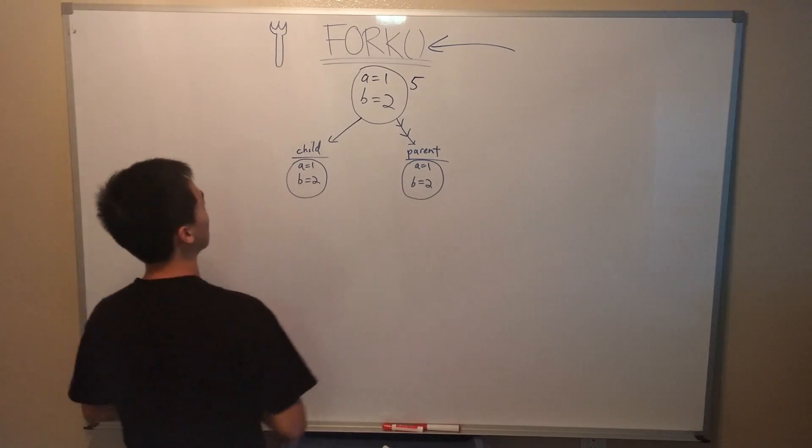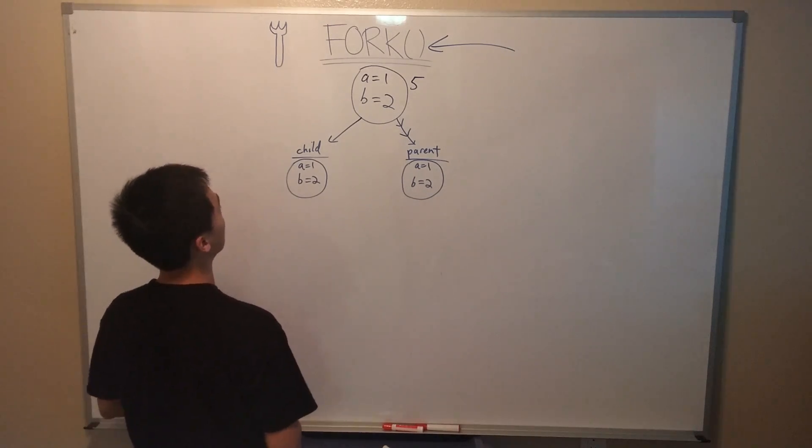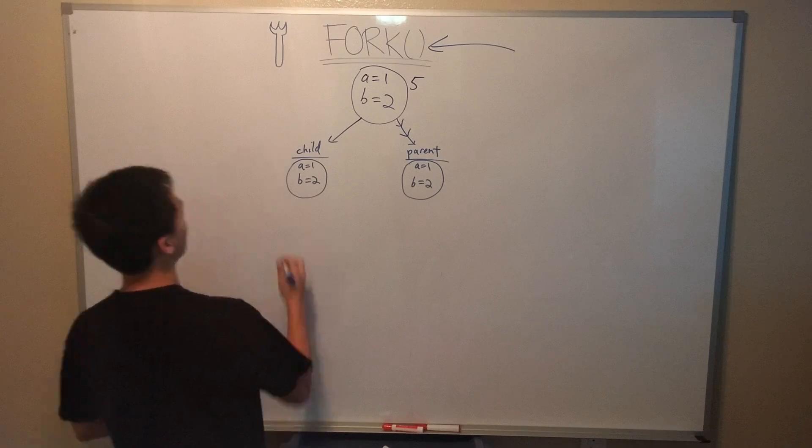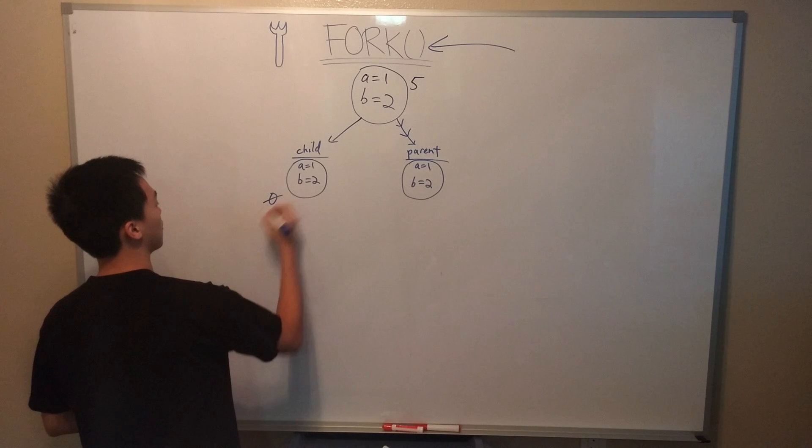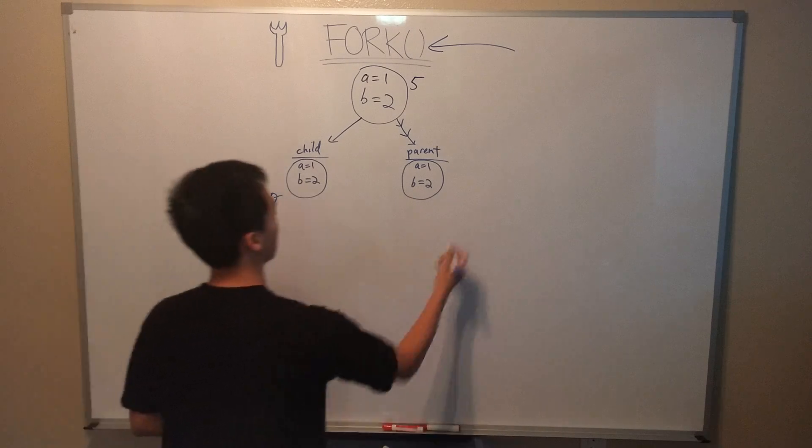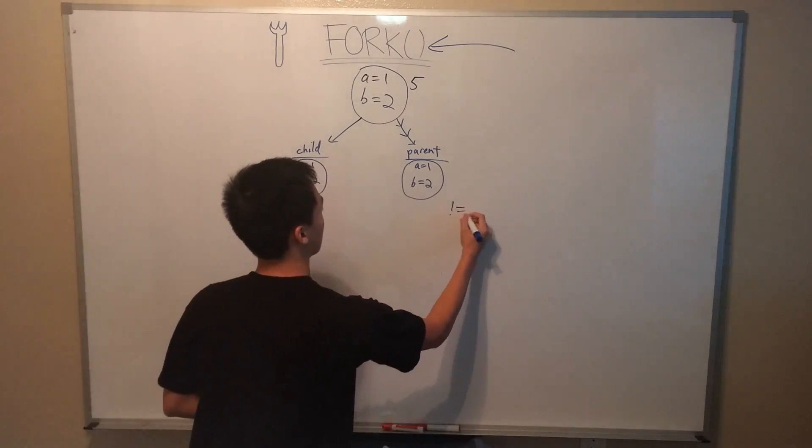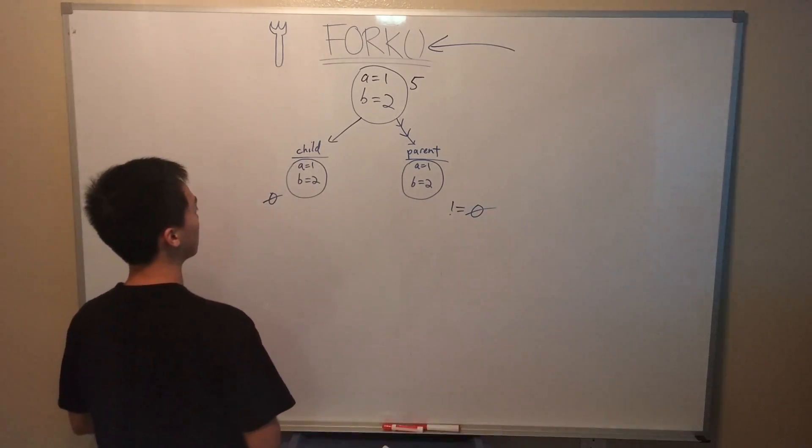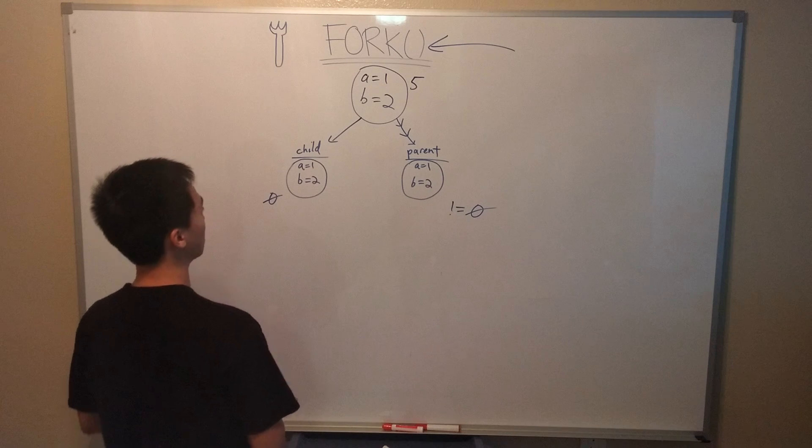The PID of the calling process is not important here. What is important is the integer each process returns. If the process returns zero, we know we're in the child. Else if the process returns anything other than zero, we know we're in the parent. At this point, both the parent process and the child process contain variables a is equal to 1 and b is equal to 2.